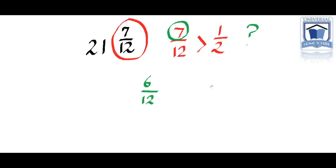Now we look at the 6, now look at the 7. The 7 is greater than the 6. So therefore 7 over 12 is greater. So therefore we add 1 to the 21 and we get 22. So 21 and 7 twelfths rounded to a whole number would be 22.